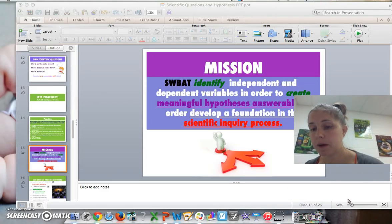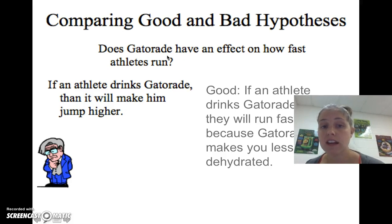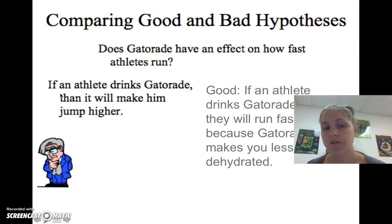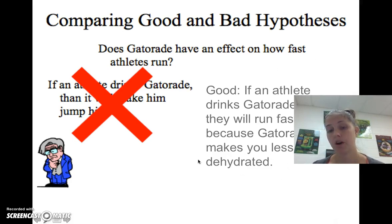Now let's compare good and bad hypotheses. A bad hypothesis: if an athlete drinks Gatorade, then that will make him jump higher. First, you haven't given a because. Second, look at our question: does Gatorade have an effect on how fast an athlete runs? This addresses jumping, not running speed — so it's a bad hypothesis. A good hypothesis would be: if an athlete drinks Gatorade, then they will run faster, because Gatorade makes you less dehydrated — that's part of our research.